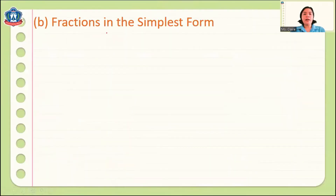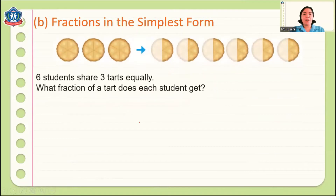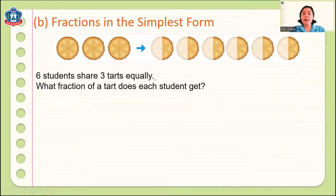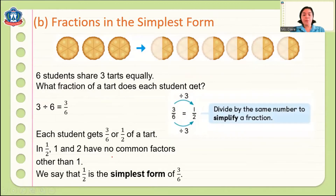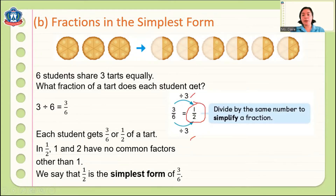Another problem: Fractions in simplest form. Six students share 3 cards equally. What fraction of the card does each student get? Three divided by 6 equals 3/6. We can reduce it to simplest form: divide both the numerator and denominator by 3, which gives us 1/2. This is how to simplify fractions.